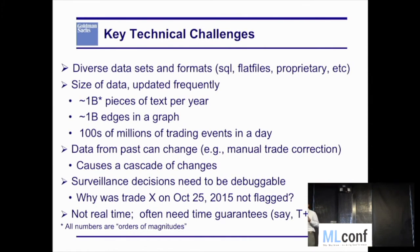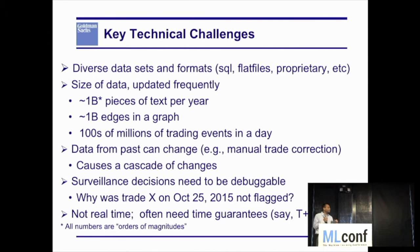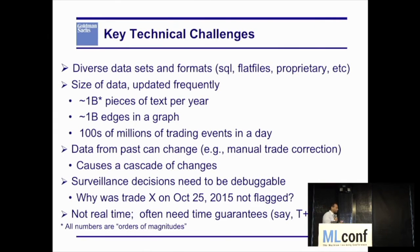Assuming the stakes are high, I'll lay down a few technical challenges — none of which is unique to us, but the combination is reasonably unique given the financial industry we are in. We have a lot of diverse data and formats. We get all of the firm's data from different parts of the organization — SQL files, flat files, HDFS files, proprietary formats. The size is obviously an issue: about a billion pieces of text per year — emails, Bloomberg chats, and other text. We have built a graph with one billion edges.